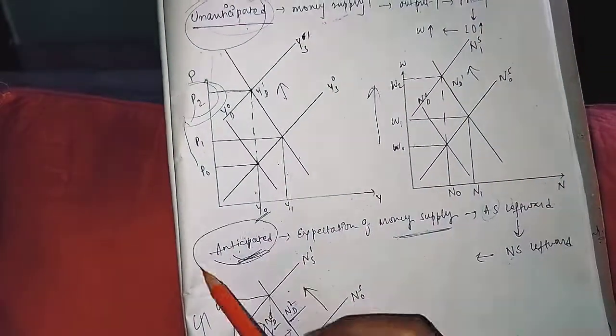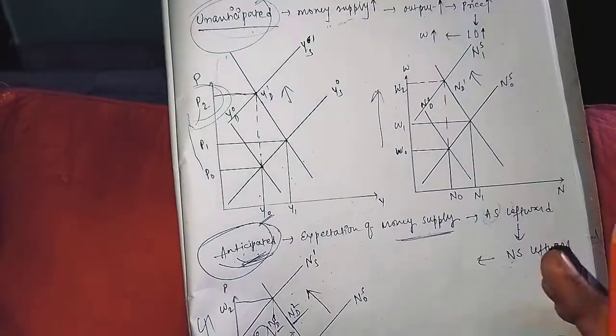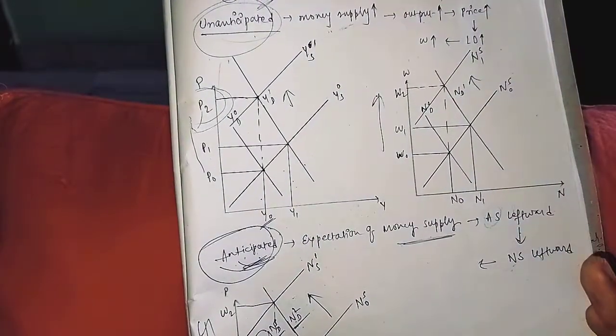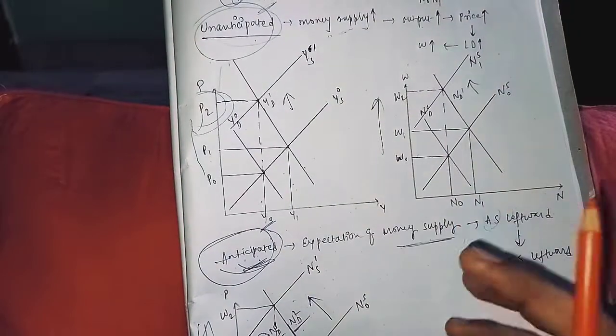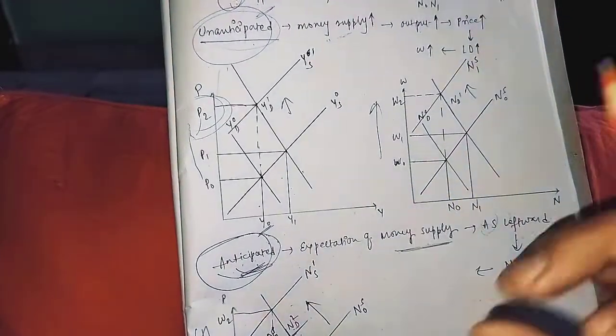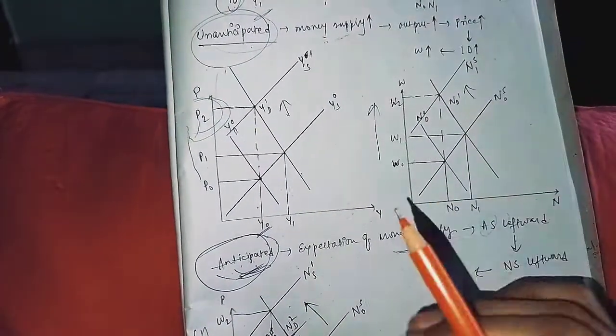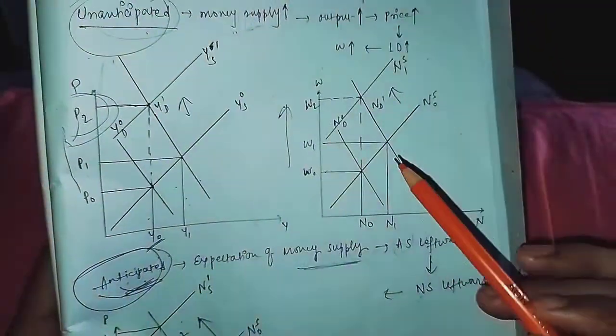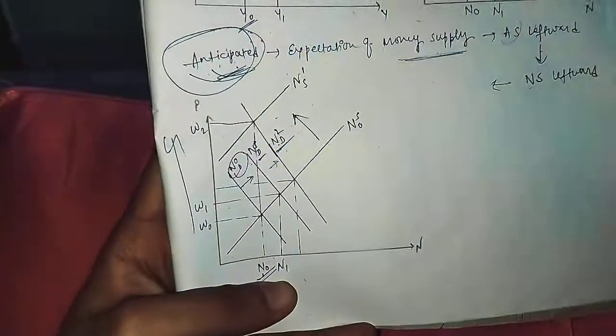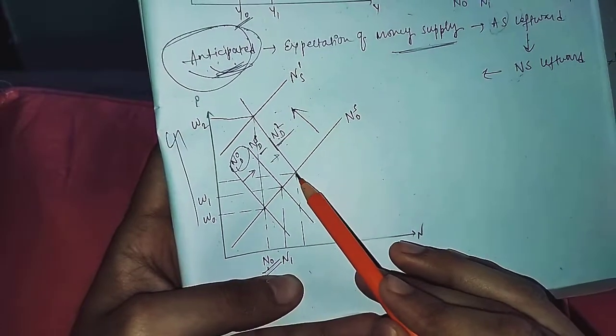So classical economists here, when people anticipate or expect the policy, labor supply decreases. People will produce less because everyone knows that the price will increase. So these things, this diagram I told you about.